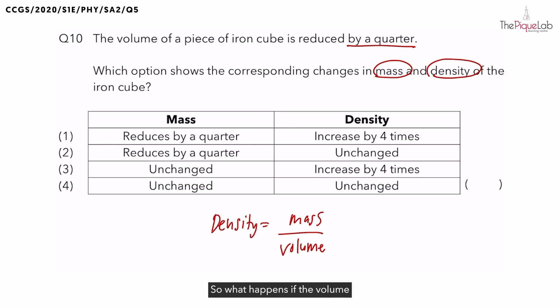So what happens if the volume of the iron cube is reduced by a quarter? In simpler words, imagine if you cut the iron cube into 4, and you only kept a quarter of it. You are going to throw 3 quarters of the iron cube.